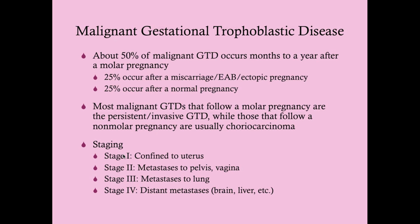How do we stage this? This is going to be important in determining treatment. Stage one is confined to the uterus. Stage two means there's metastasis to the pelvis or to the vagina. Stage three is metastasis to the lung — that's the most common site of metastasis for all the malignant gestational trophoblastic diseases. And stage four is distant metastasis, which can be to the brain, liver, and other organs.